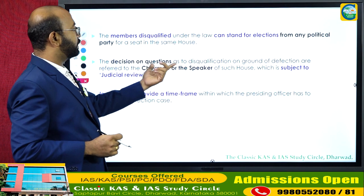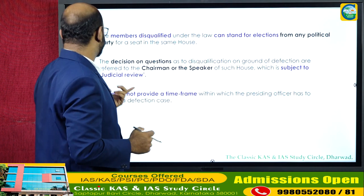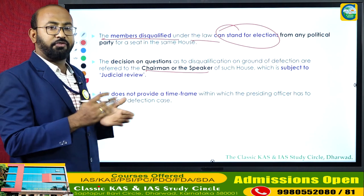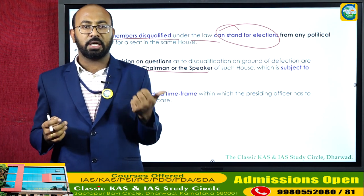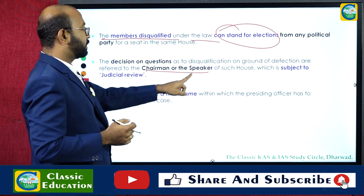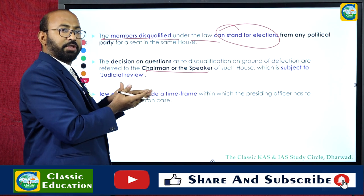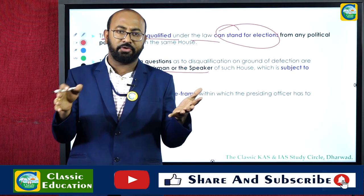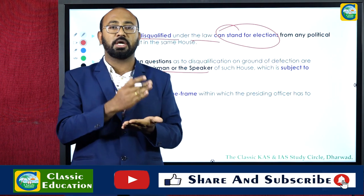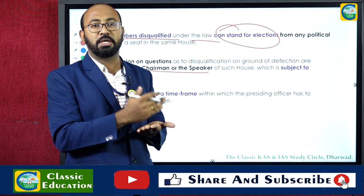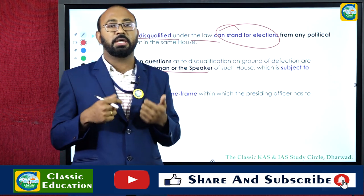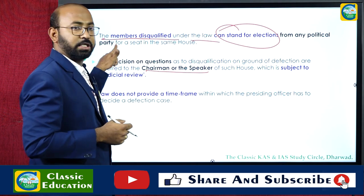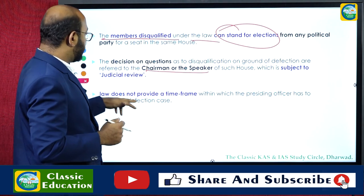Questions about disqualification on grounds of defection are referred to the Chairman or Speaker — the presiding officers. The Chairman handles the upper house and the Speaker handles the lower house. These decisions of the presiding officers are subject to judicial review — the Supreme Court can examine the grounds on which these officers took action. However, the Supreme Court especially barred judicial intervention prior to the decision-making stage.